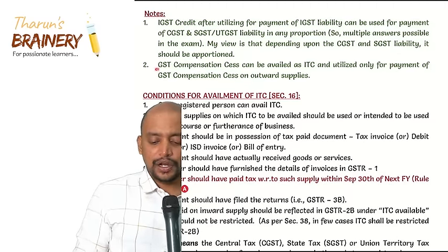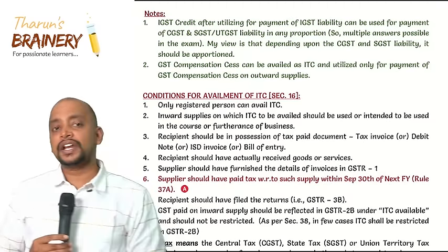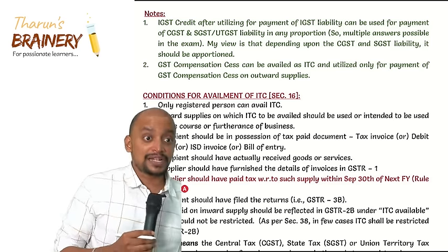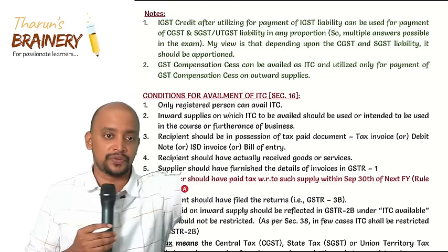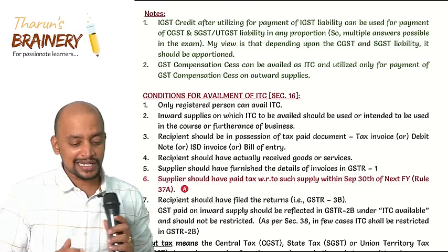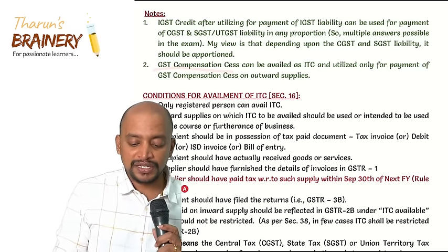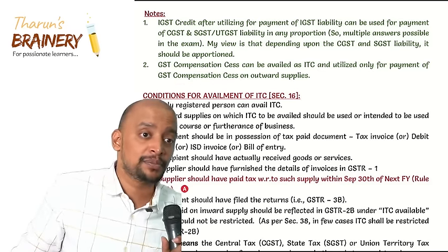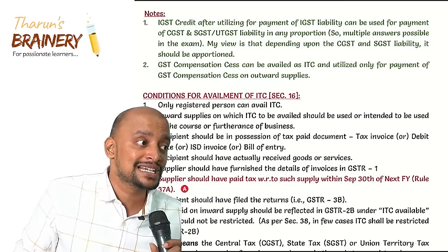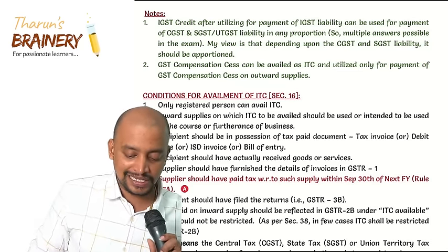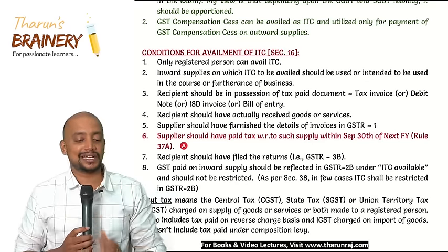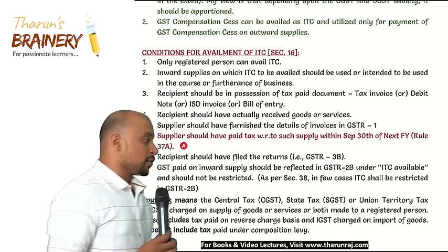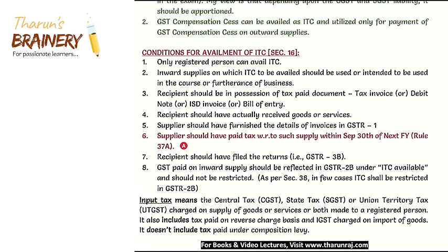GST Compensation Cess paid on inward supplies can be taken as ITC, but GST Compensation Cess credit can be set off only against GST Compensation Cess payable on outward supplies. It cannot be used for payment of IGST liability. We have now completed two sections: Section 41 (availment of ITC) and Section 49 subsection 5 (utilization of ITC).